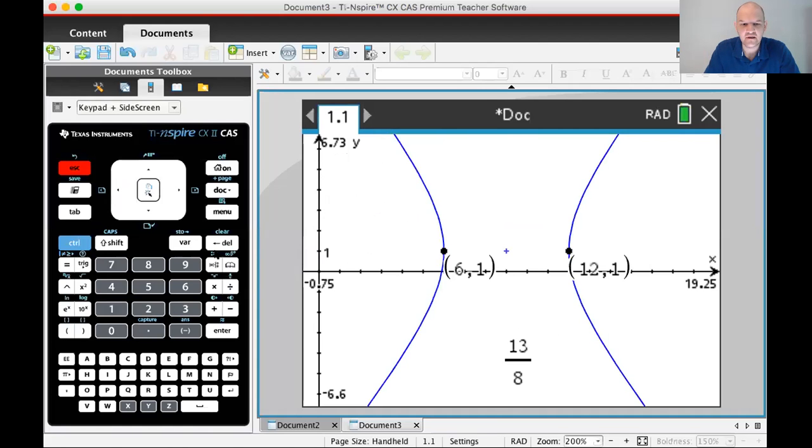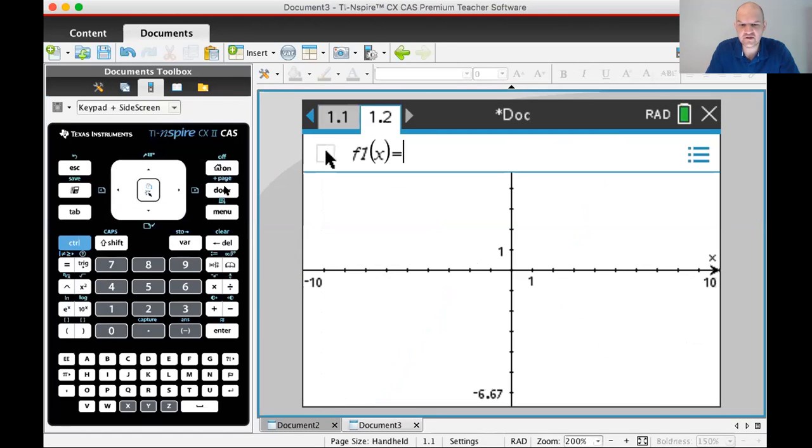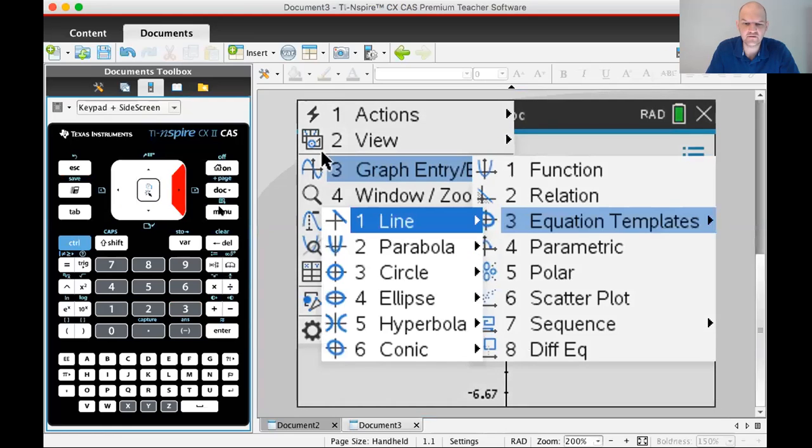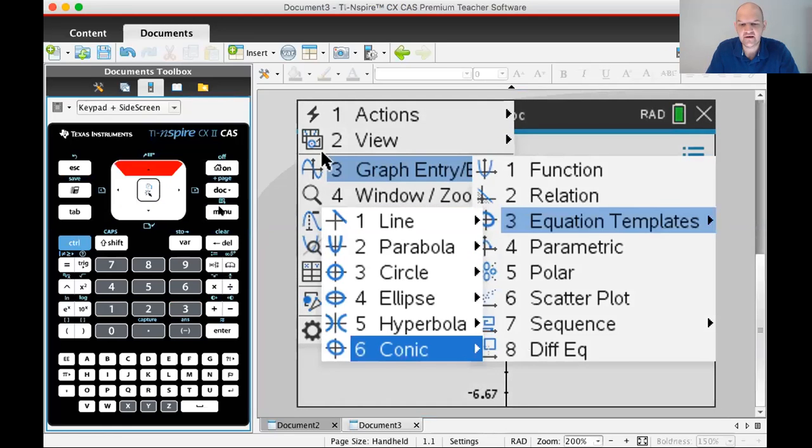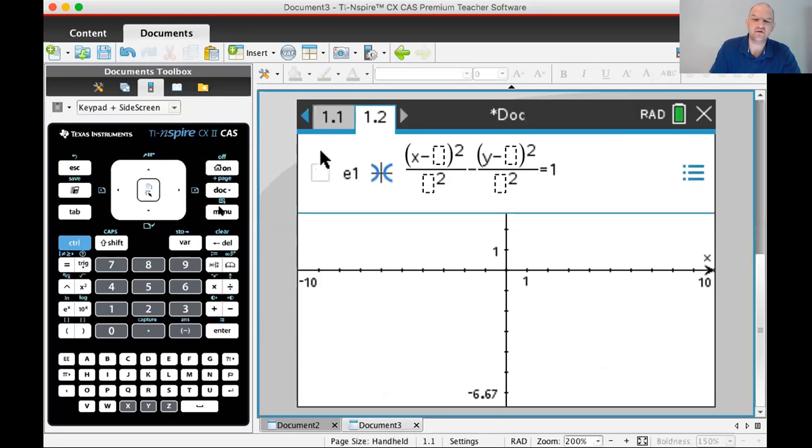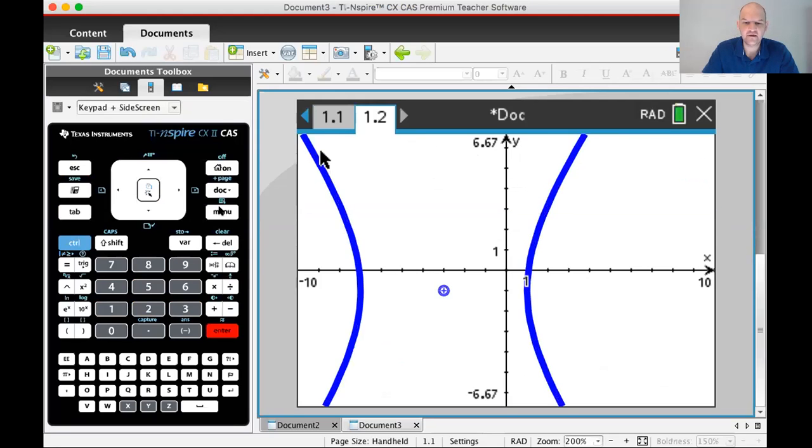I'm going to check this by adding a graph page. I'm going to change it to a conic. So menu 3, 3, hyperbola. And then I think that this is an East West. And it's going to be (-3, 4), because it's going to square it (-1). And then, 28/5.